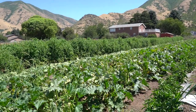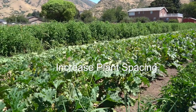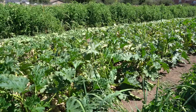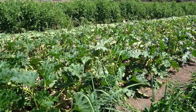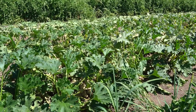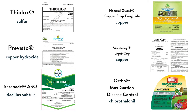Increase plant spacing. This can help reduce powdery mildew severity with better air movement and reduce humidity in the plant canopy. For chemical control, sulfur products work very well. Apply when the first white spots are observed and repeat applications every seven to ten days.